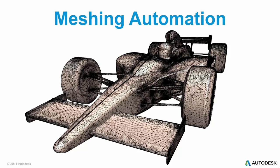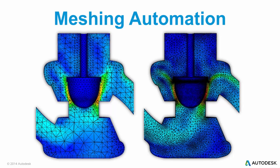Users are free to customize, refine, or coarsen the automatic mesh if they choose. Mesh adaptation determines where additional detail may be necessary to best capture the physics of a particular analysis. The user does not need to have a background in fluid dynamics to use Simulation CFD to create repeatable, mesh-independent solutions.